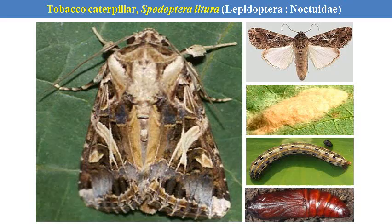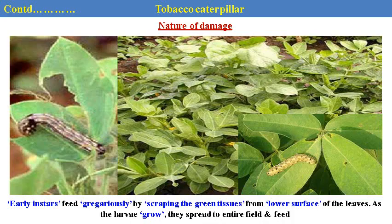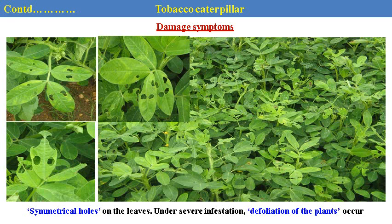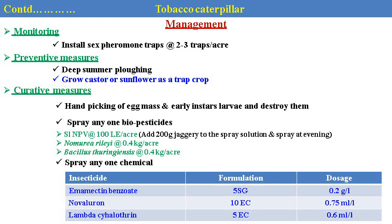The tobacco leaf-eating caterpillar, Spodoptera litura, is very popular and a polyphagous pest. It has the capacity to completely defoliate the leaves. It feeds gregariously by skeletonizing the green tissue and leaf surface at the lower surface of the leaves. As the larvae grow, they spread over the entire field and feed voraciously on leaves. Asymmetrical holes on leaves are observed; under severe infestation, defoliation can occur. Management: install pheromone traps. Castor, dhaincha, and sunflower can be planted across the border as trap crops. Hand picking of egg masses with early instar larvae to destroy them. Spread biopesticides like SLNPV, Nuclear polyhedrosis virus. Bacillus thuringiensis can be sprayed via SMA method. Emamectin benzoate and lambda-cyhalothrin are found effective against Spodoptera.